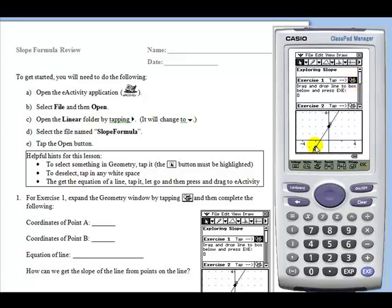Students will then select the coordinates of each point, record those in the worksheet, tap in any white space to deselect, and then select the line and drag it up to eActivity.